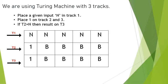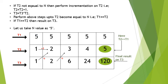Otherwise, if T2 is not equal to N, then we have to increment T2 by 1, and in track 3 (T3), we have to perform multiplication.